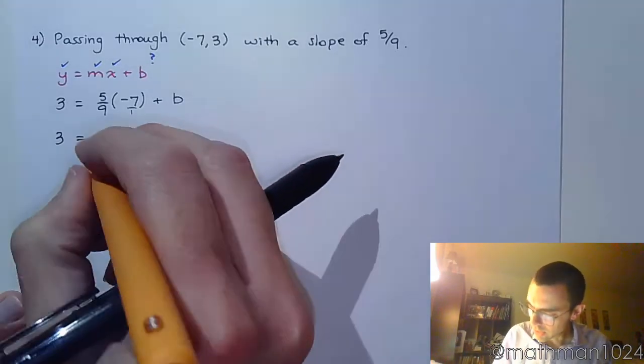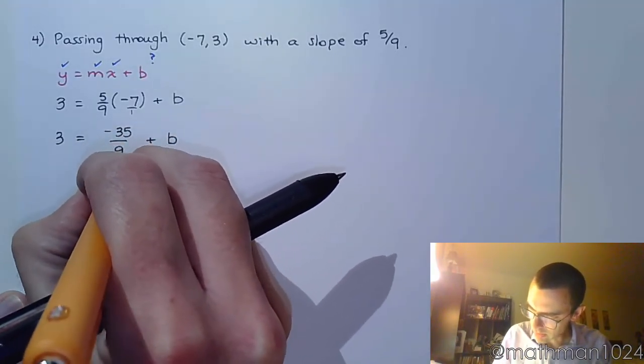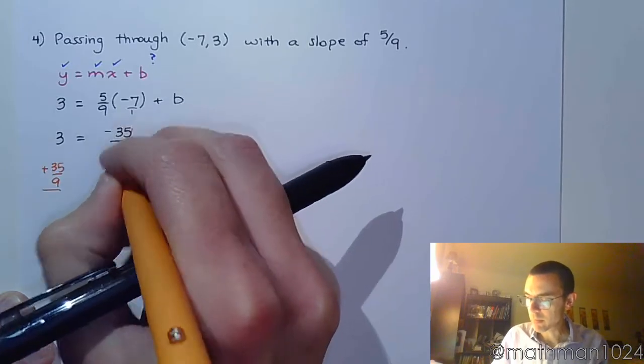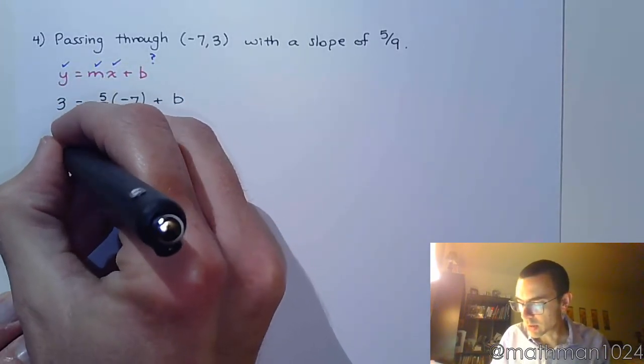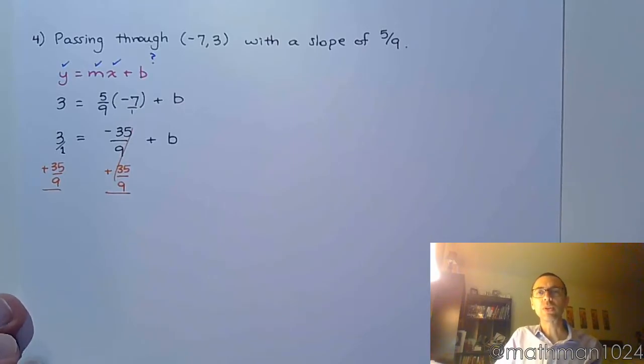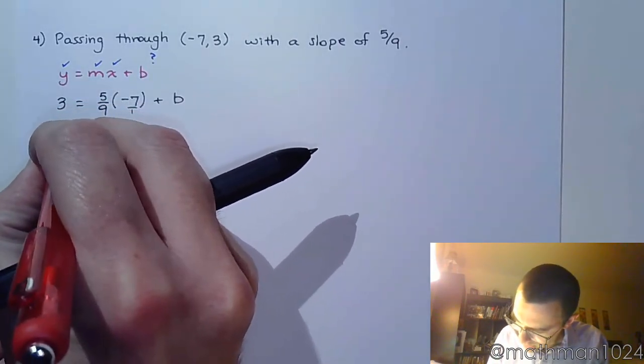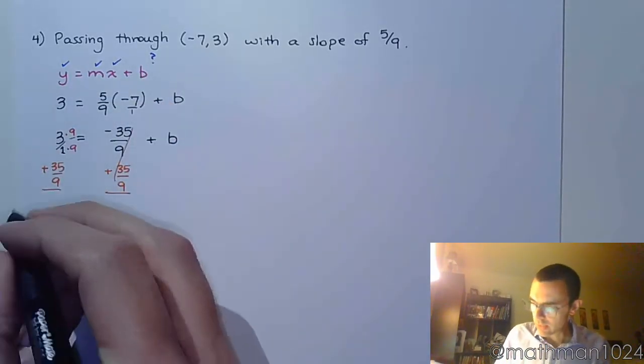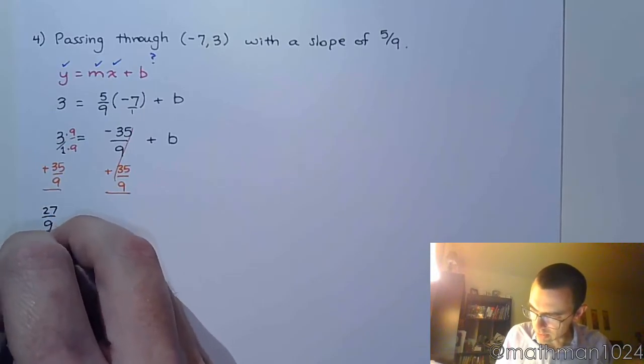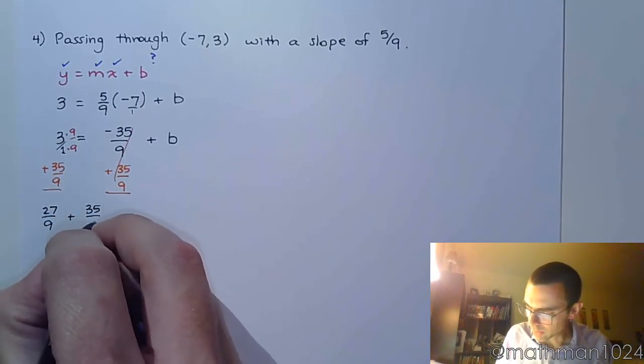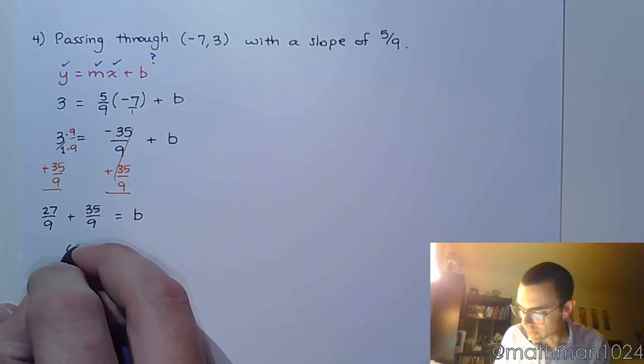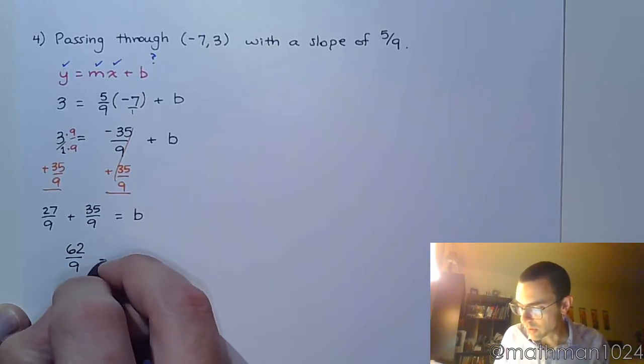Alright, so we've got to move this guy to the other side. And make sure that you get a common denominator here on the left side. So if you want to, think about 3 as being 3 over 1. And think about the factor that's missing so that it has a common denominator with 35 over 9. And he's missing the 9. So if I multiply top and bottom times 9 over here, I'm now going to have this expression. I'm going to have 27 over 9 plus 35 over 9 equals b. And so we just finish this.